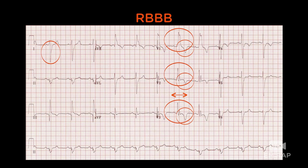Here's another example showing the same things: an RSR pattern in V1, V2, V3 with a widening QRS, symmetric T-wave inversion consistent with bundle branch block, and again the S1Q3T3. The axis is predominantly down in lead 1 and up in lead 3 and aVF — right axis deviation with right bundle branch block. This heart is under significant strain.